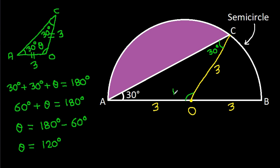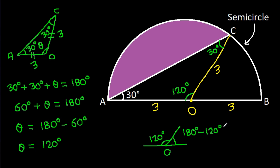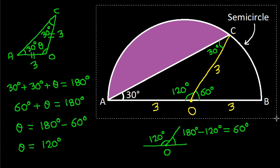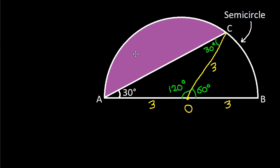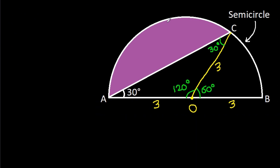So theta — angle COA — is 120 degrees. And since angle COB is supplementary or computed from the remaining angle at O, this angle will be 60 degrees. So angle COB is 60 degrees.